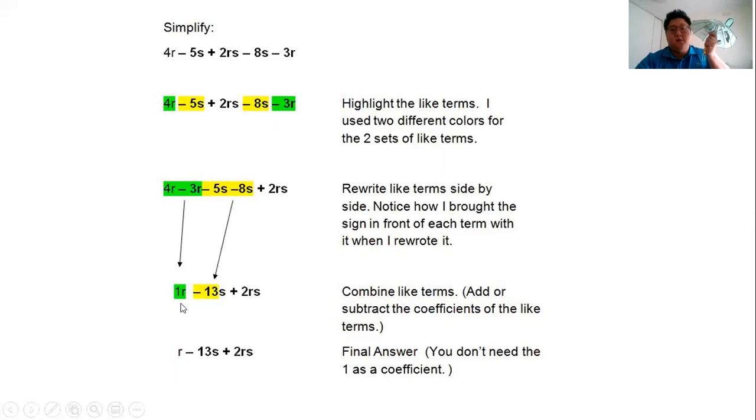In total, because there's already a 1r, we don't have to write the 1 in front, we can just write r to represent the 1 letter r there. So our answer is r take away 13s plus 2rs, and that is this expression simplified.